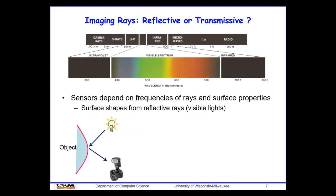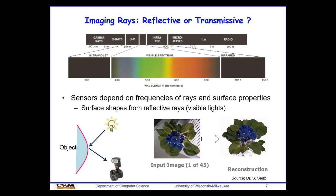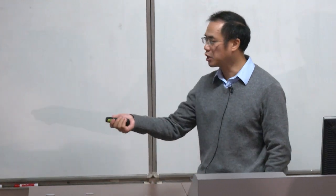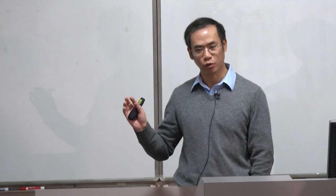Imaging rays can be reflective for surface reconstruction or transmissive for internal structures. With reflective rays, we can see surface details. For example, using about 45 images of a flower from different views, we can reconstruct the 3D surface shape. This is only surface reconstruction because visible rays are reflected on the surface and cannot penetrate into the object.